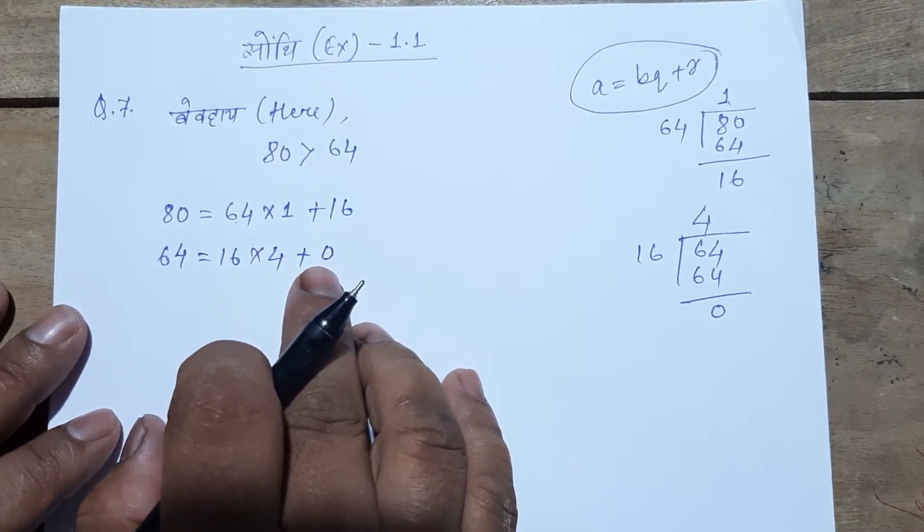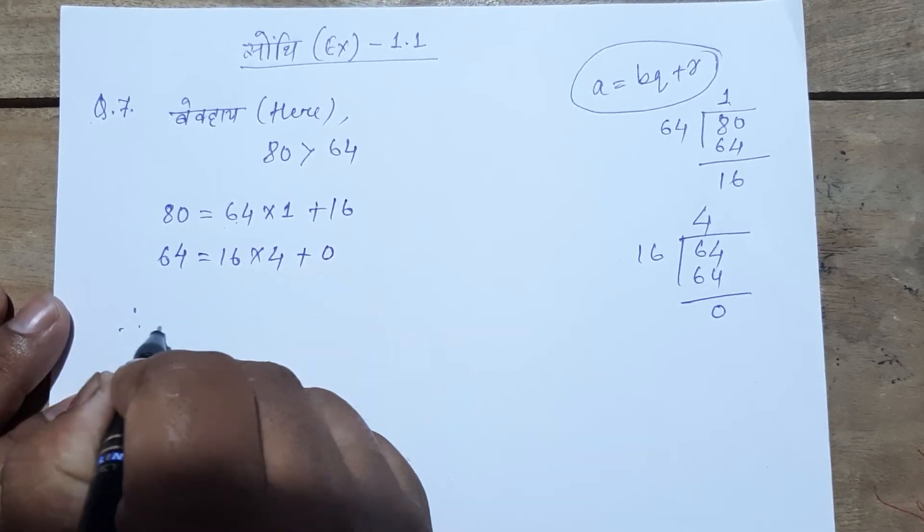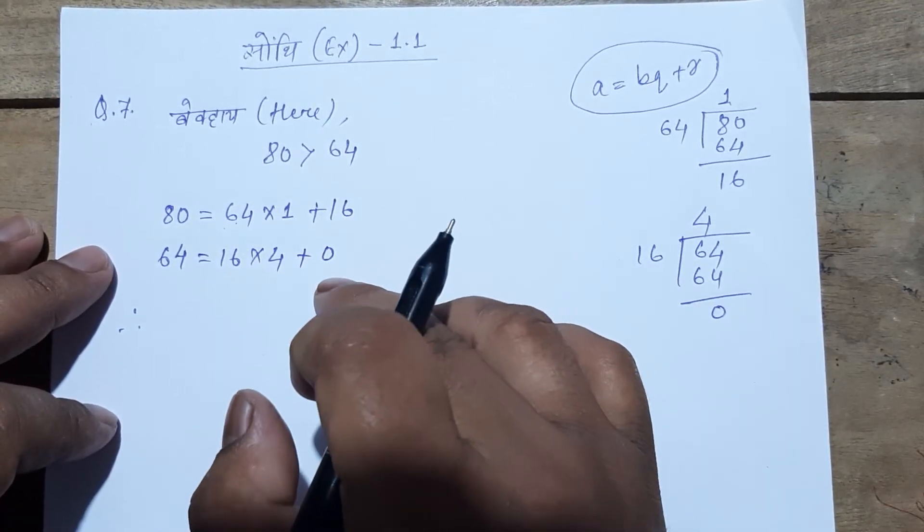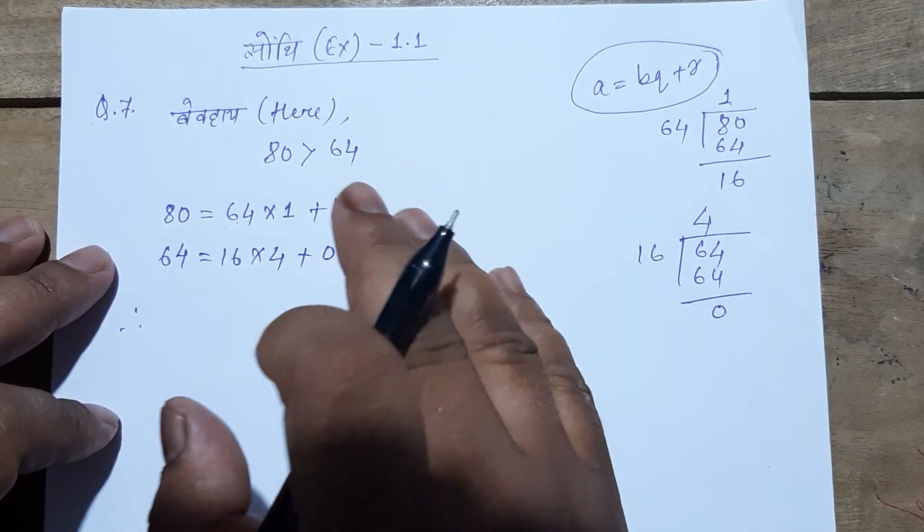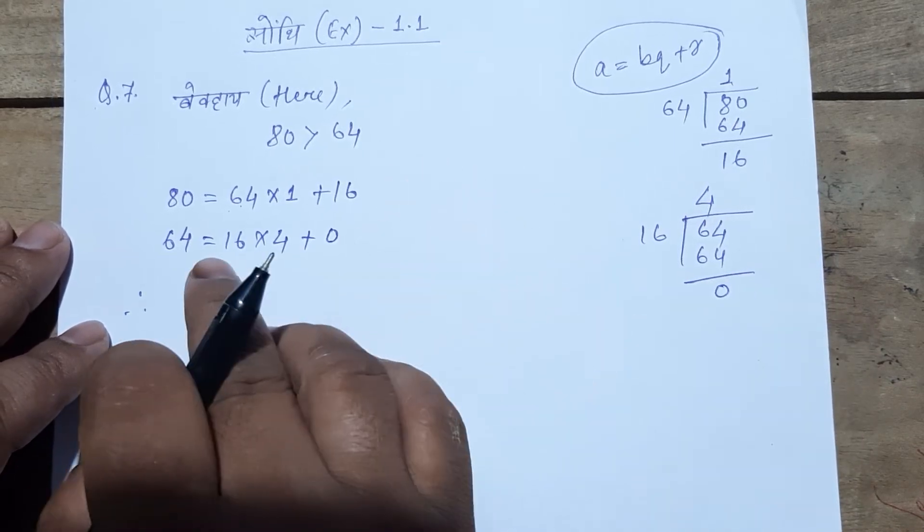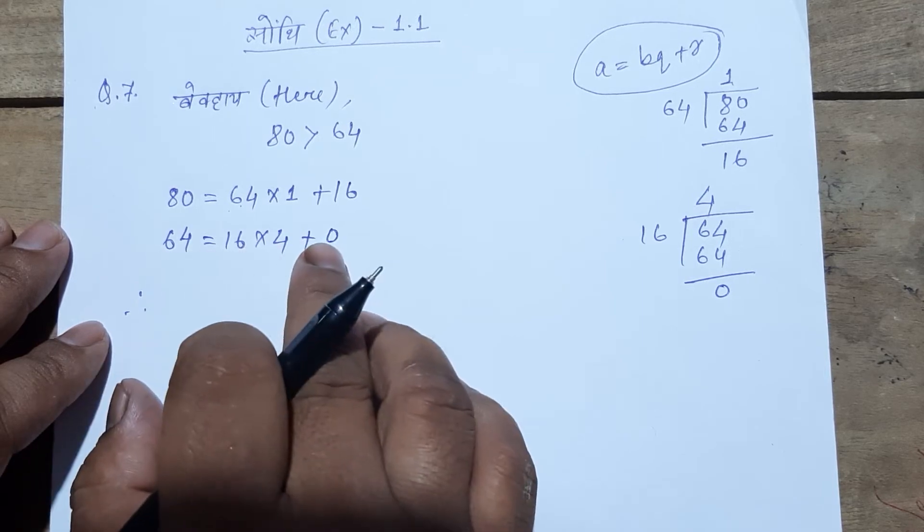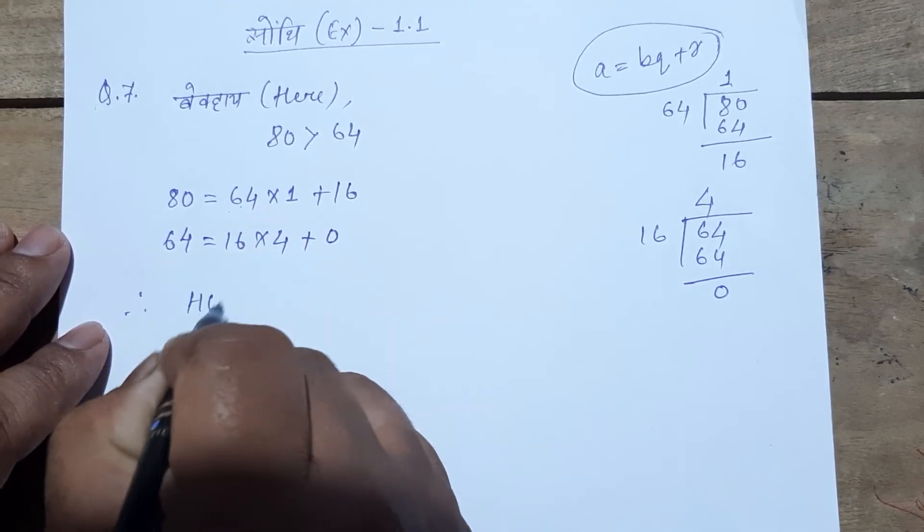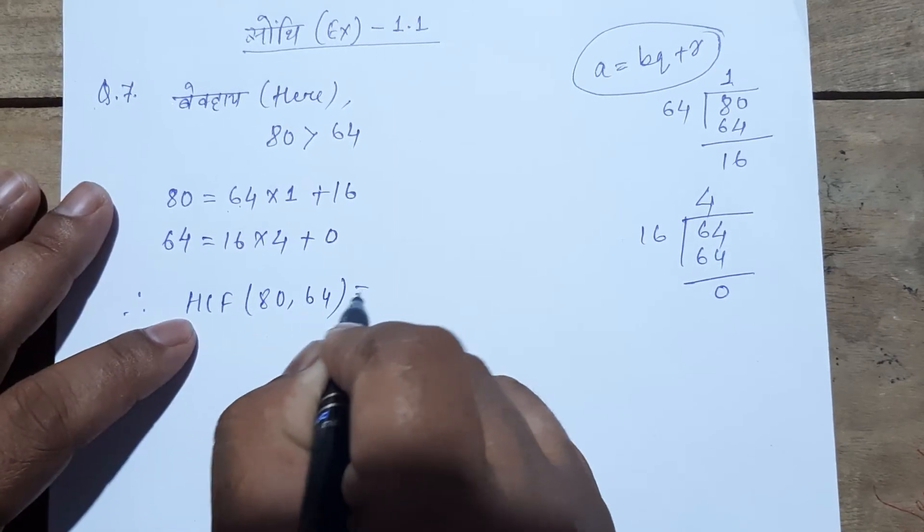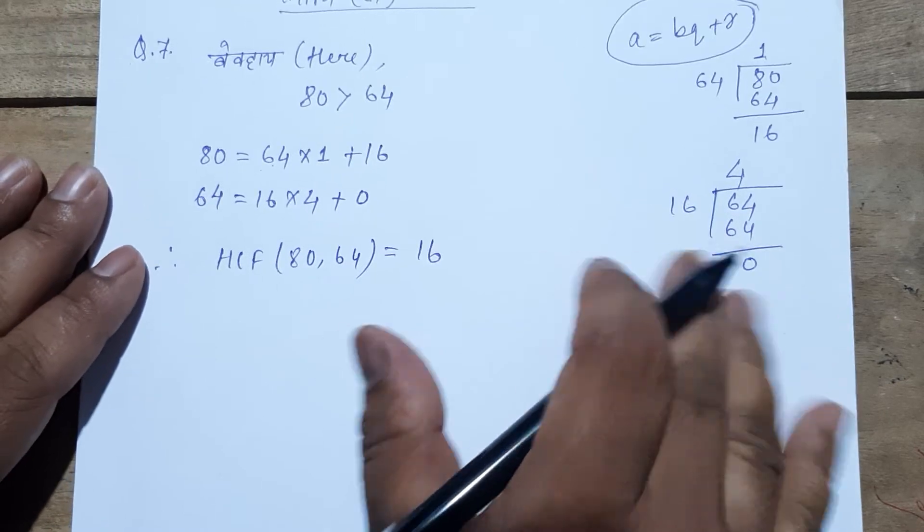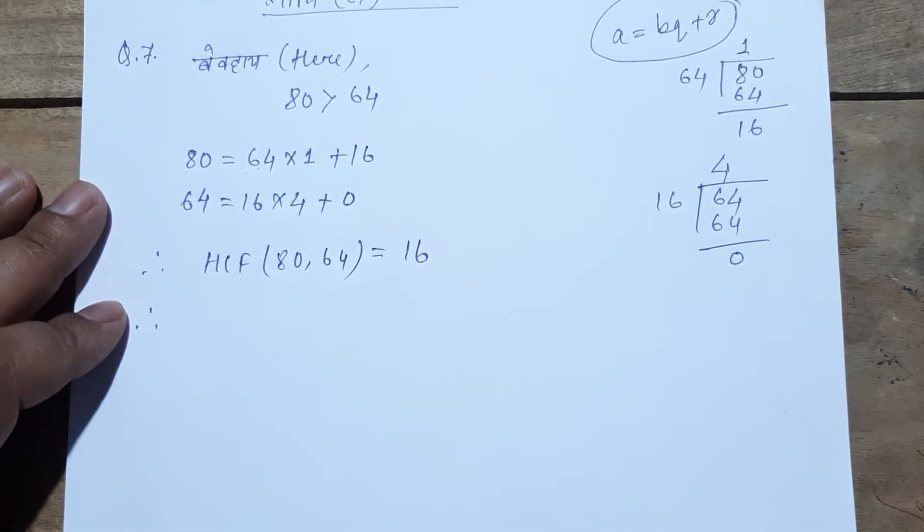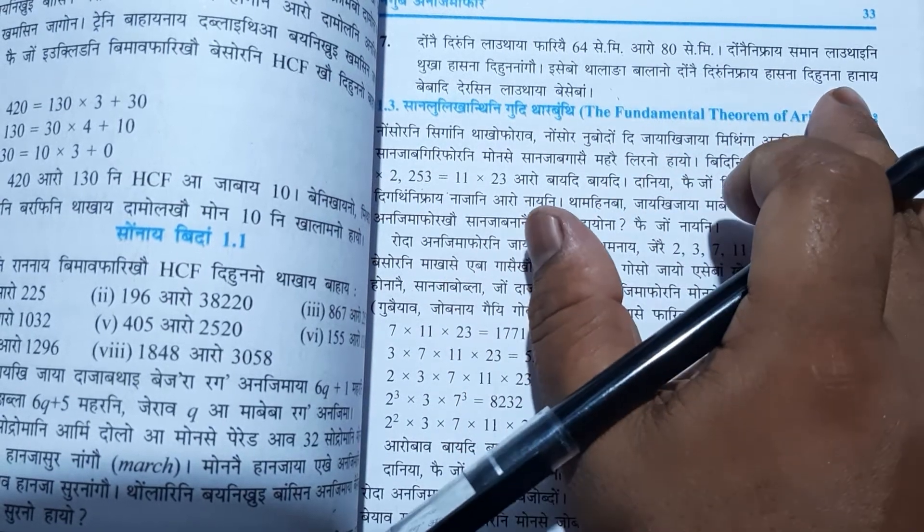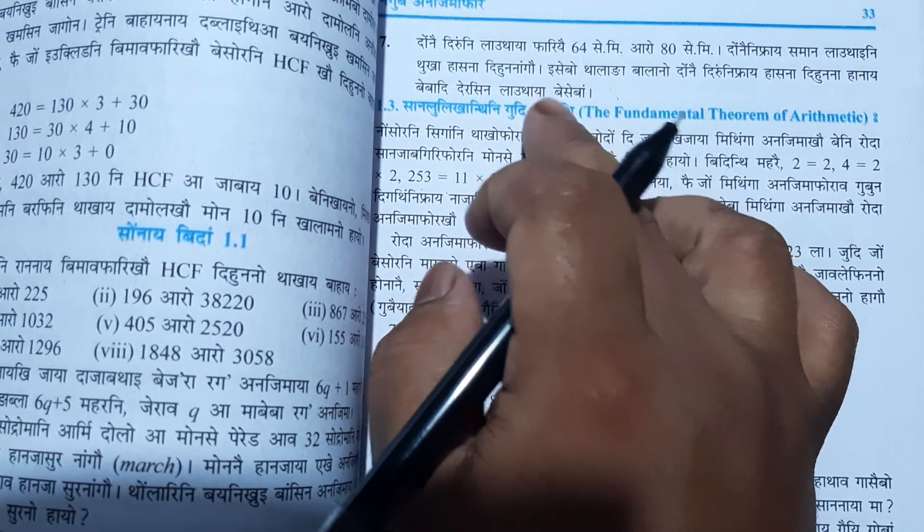That means the remainder is 0, so 64 divided by 16 gives 0 remainder. That means 64 and 16. The answer is 16cm. Therefore, the answer is 16.